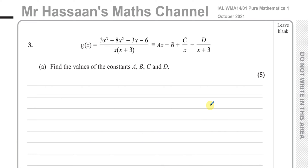Welcome back. This is Mr. Hassan's Maths Channel and this is question number three from the International A-Level Edexcel Pure Mathematics P4, October 2021 exam. The first question here is about partial fractions, where we have to split this fraction into separate terms, separate fractions. They've already given us the correct form, and all we have to do is find the values of A, B, C, and D.